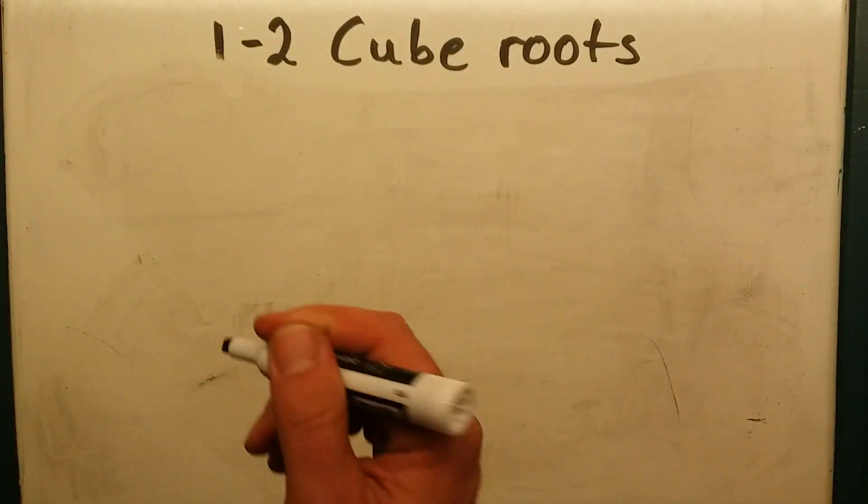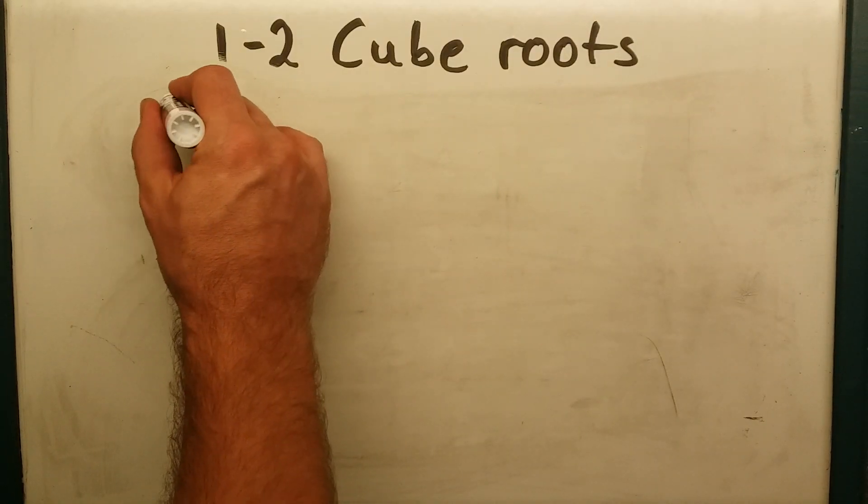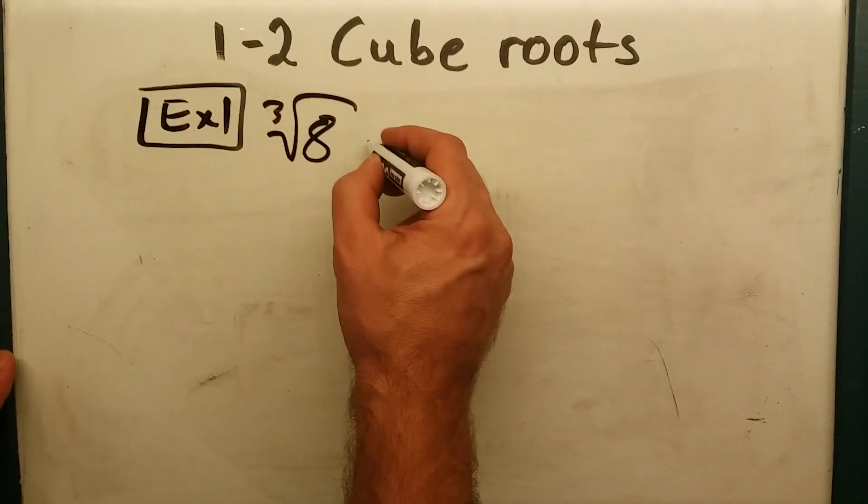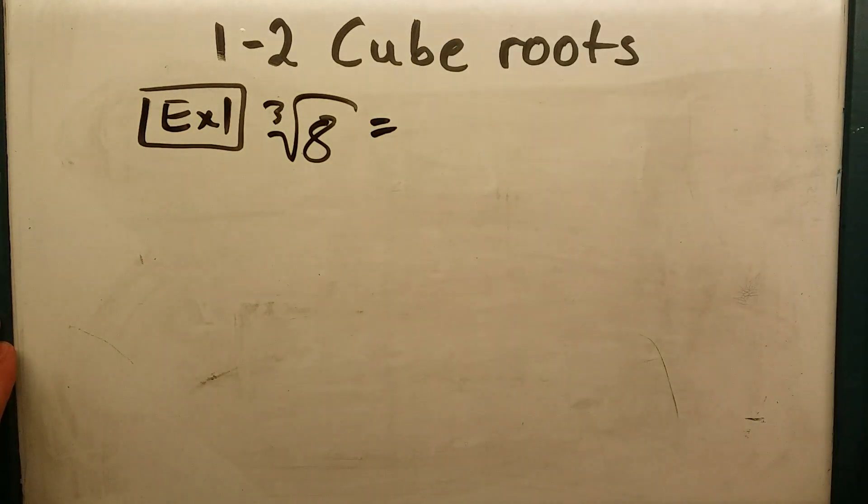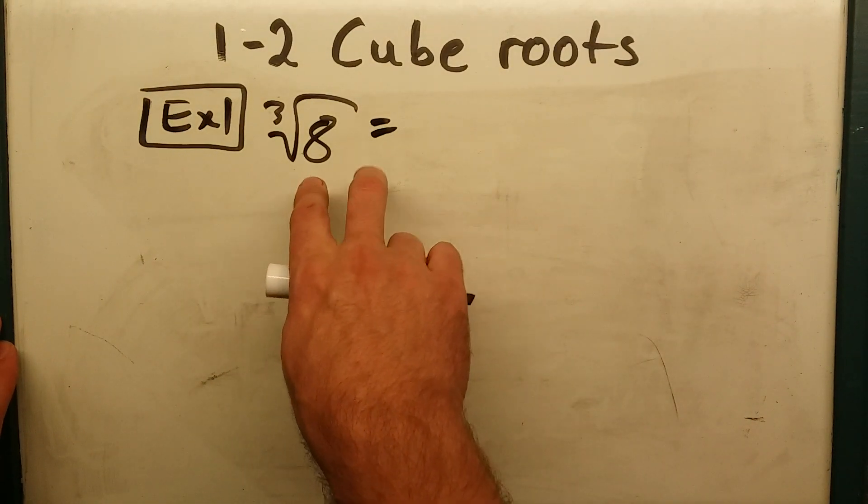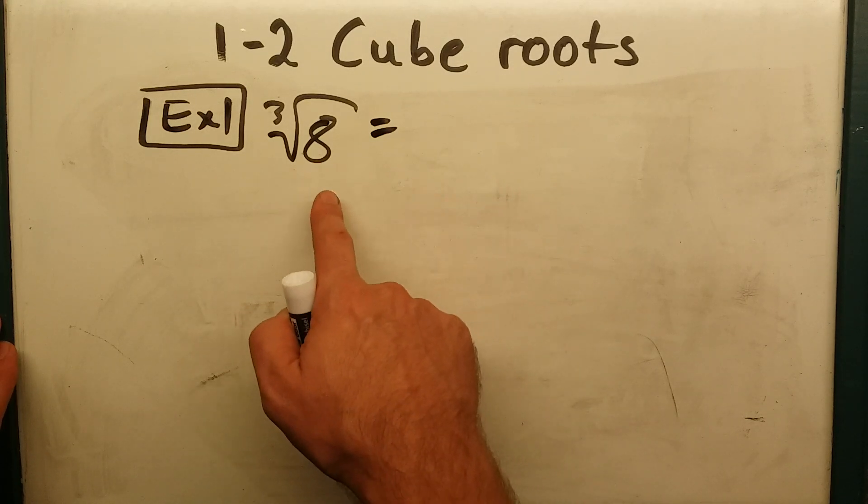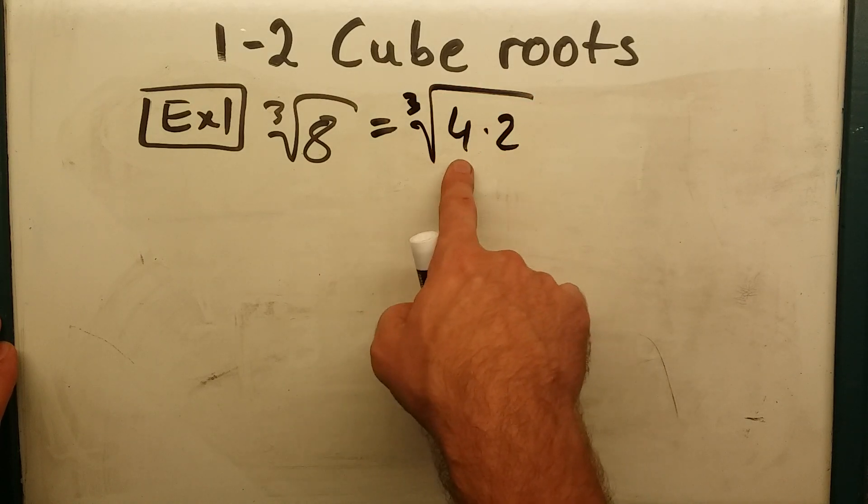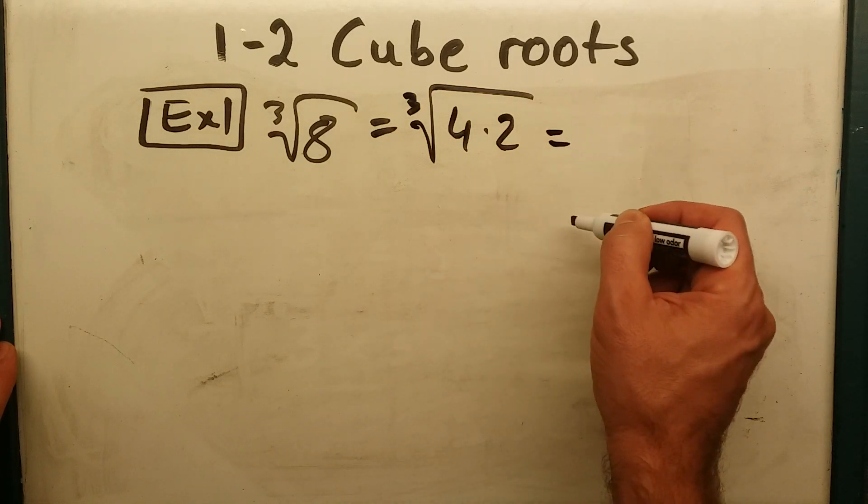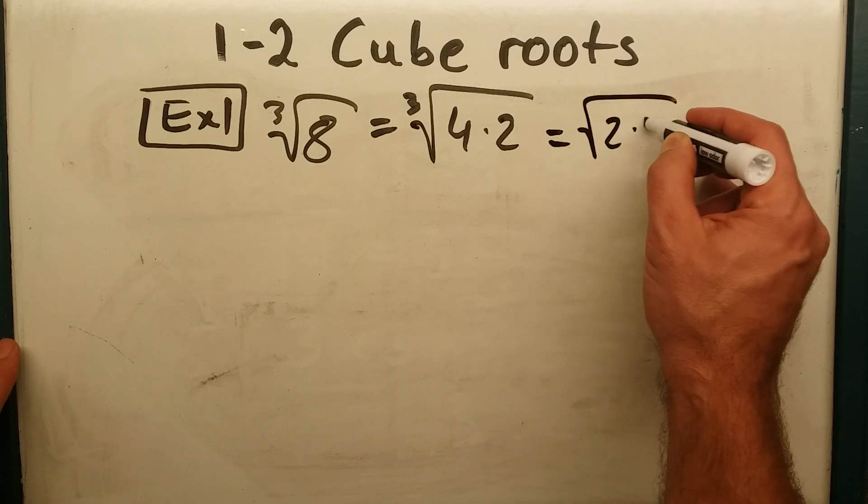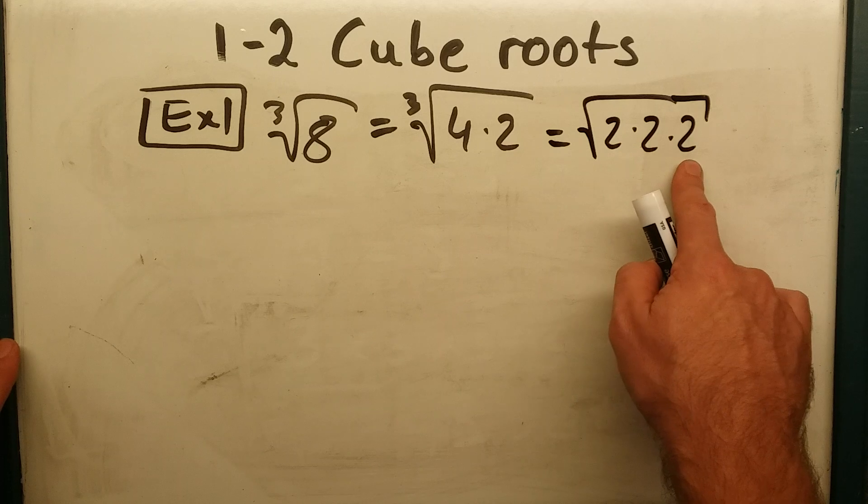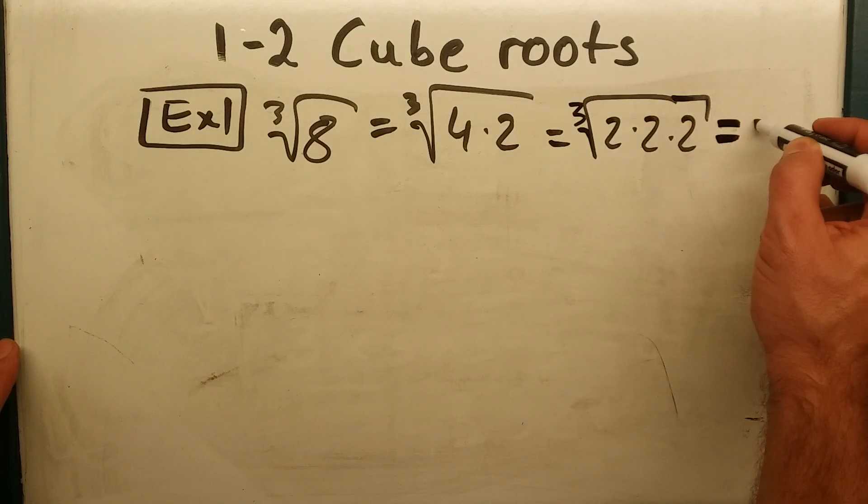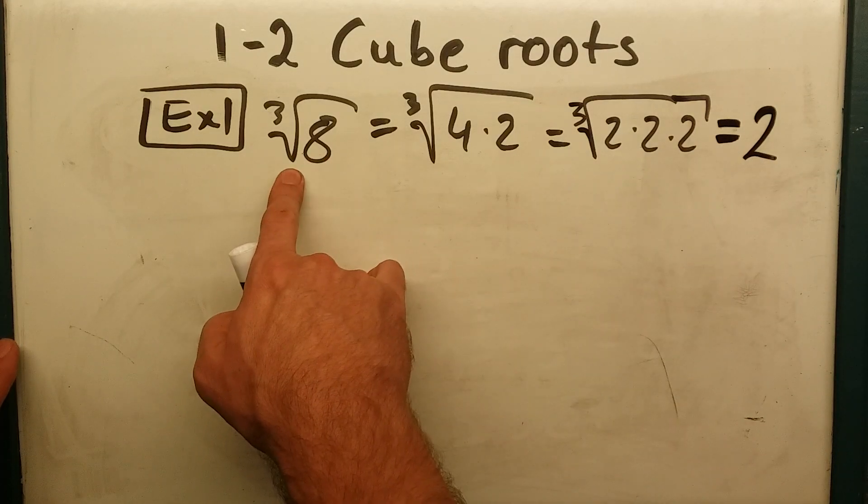Alright, let's look at a couple of examples. Example 1, find the cube root of 8. Well, you could type this in the calculator and find it, but 8 is pretty simple. What number times itself, times itself again, gives me 8? Well, I know 4 times 2 is 8, but there are no repeating factors. So I break that down even further, and we have 2 times 2 times 2. So there we have 3 equal factors. Since we're looking for a cube root, one of its 3 equal factors would be 2. So the cube root of 8 is 2.